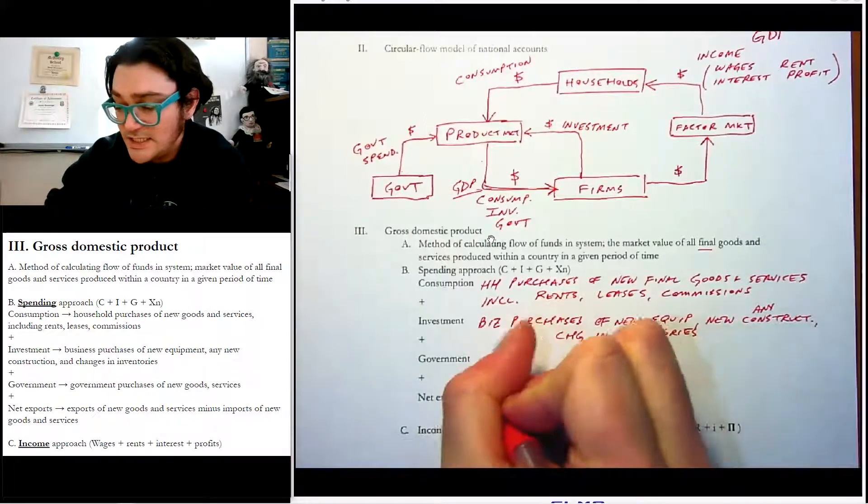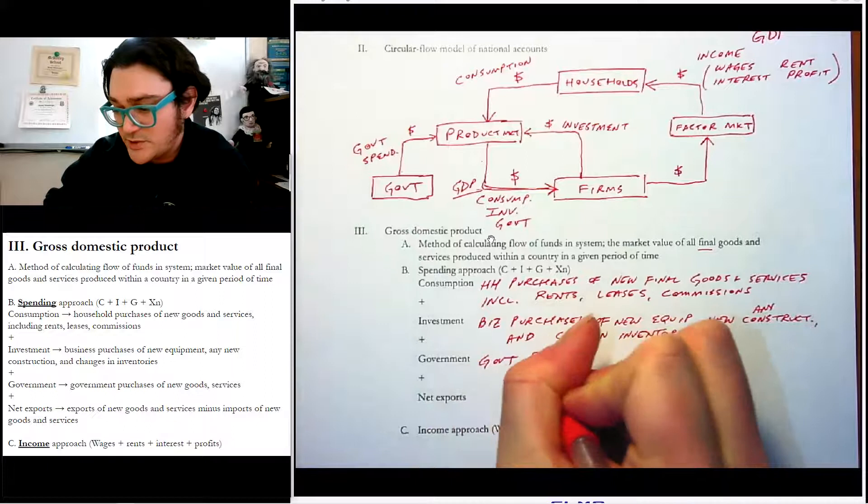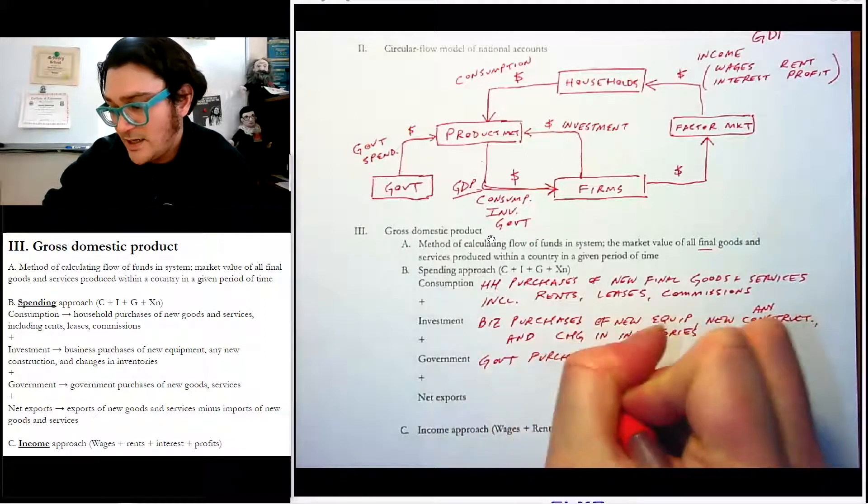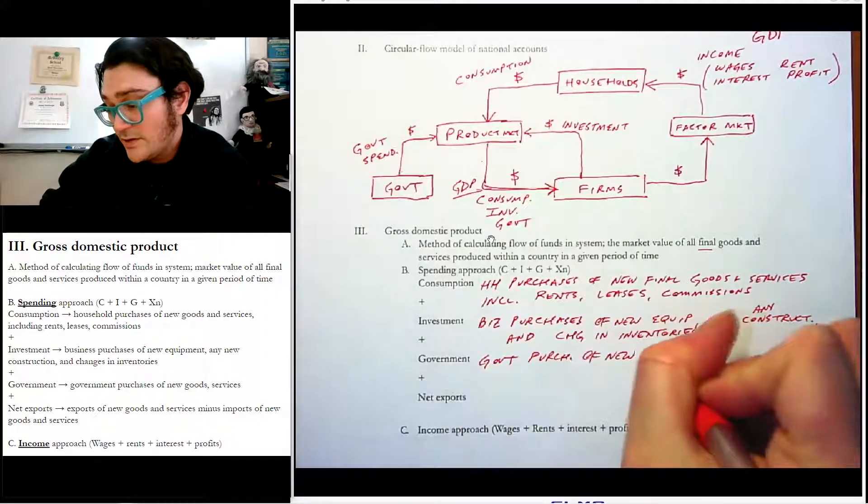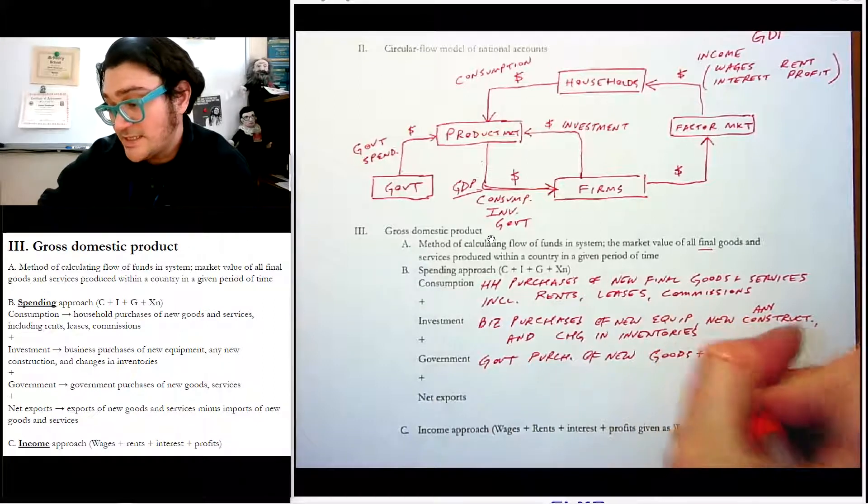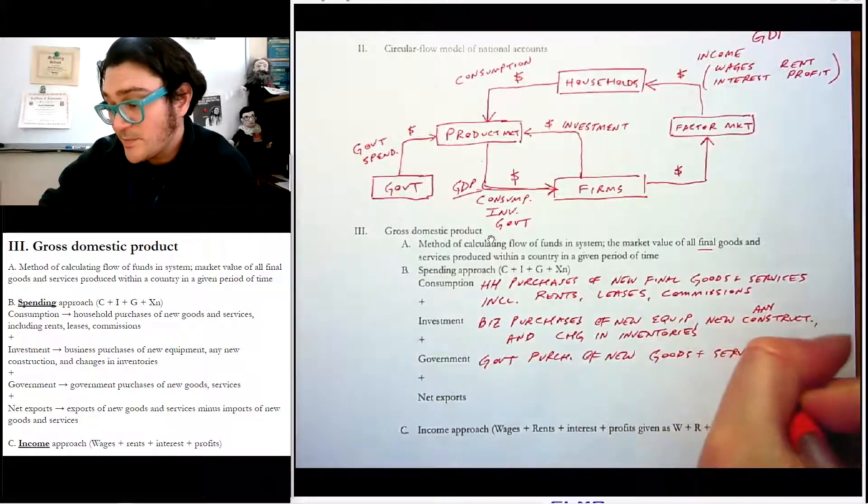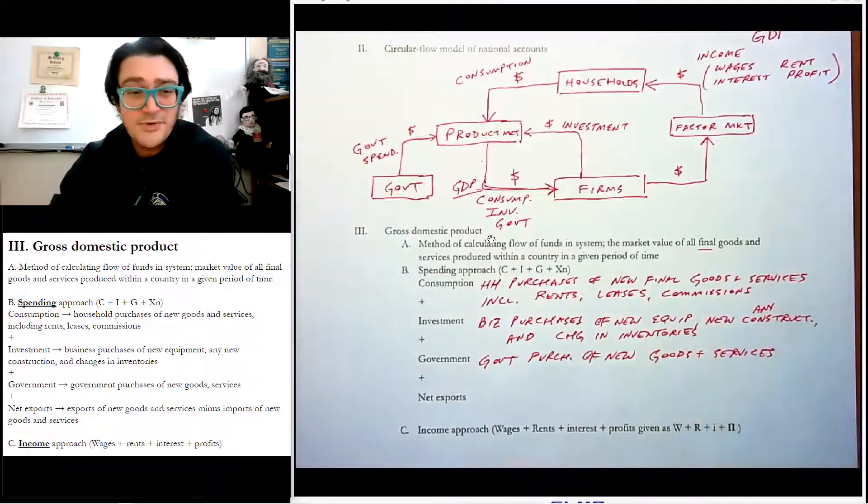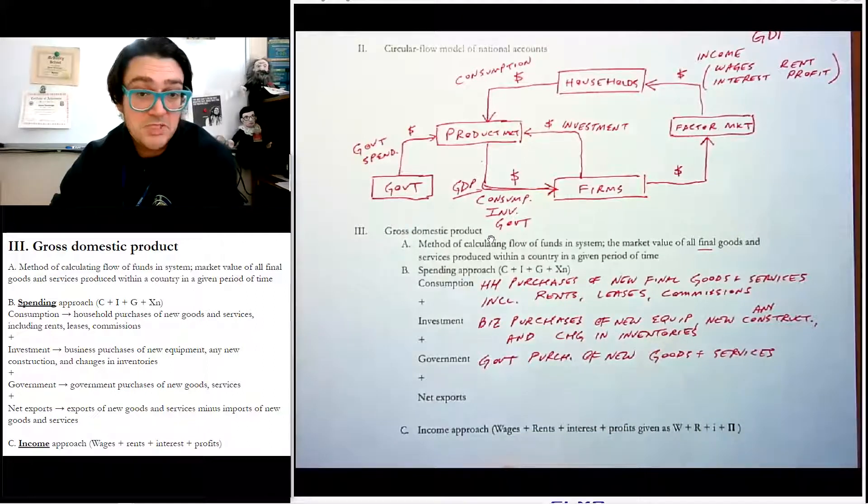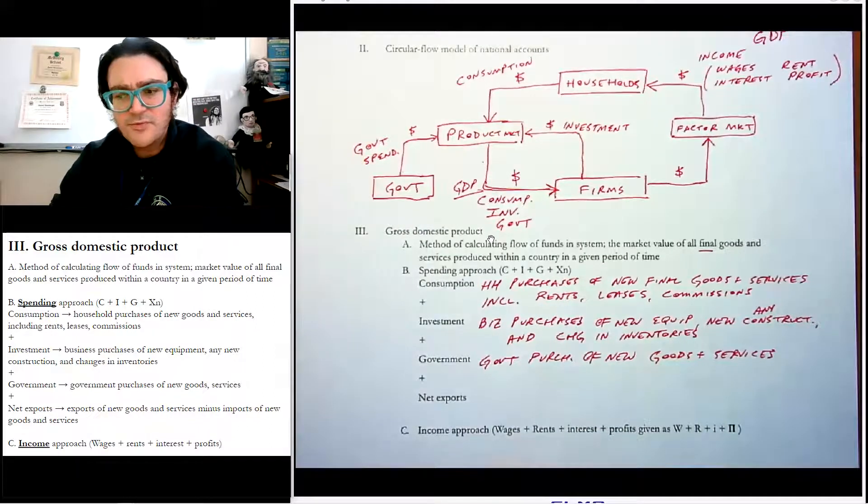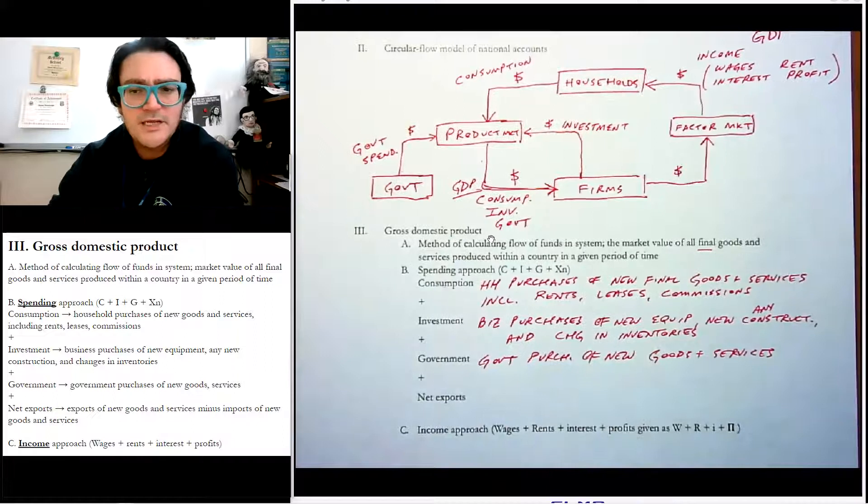Third, and this one's relatively easier, I think, is government purchases of new goods and services. So the government can spend money. And if they buy a new aircraft carrier, that counts. So that's cool. If they have government employees, that counts. So any of those things count.